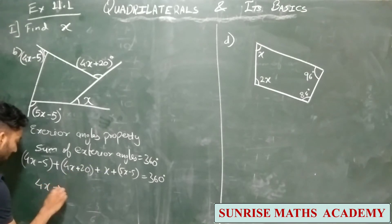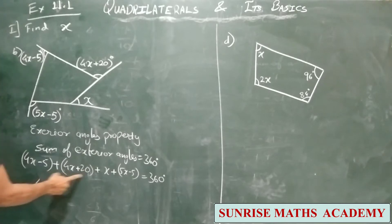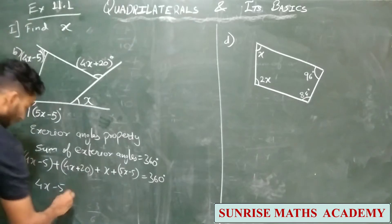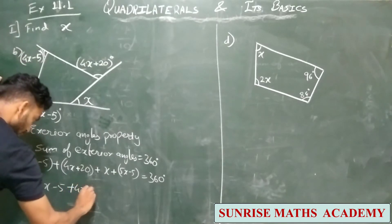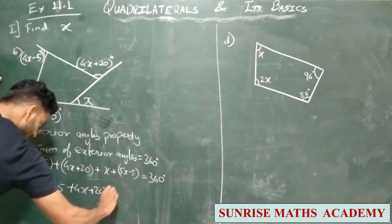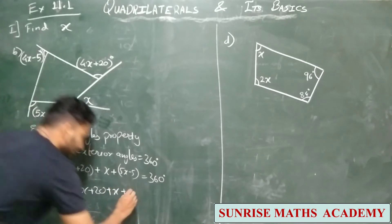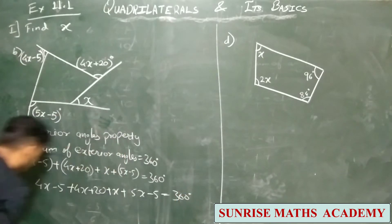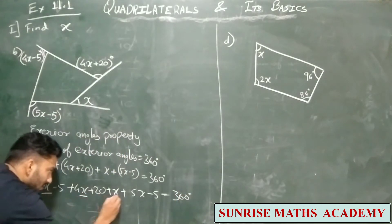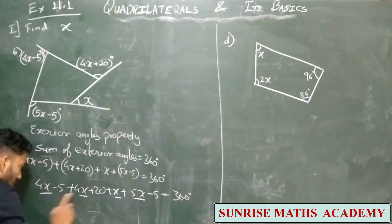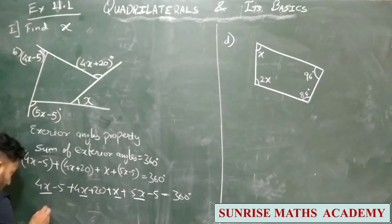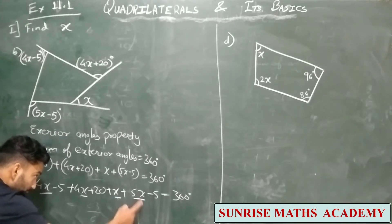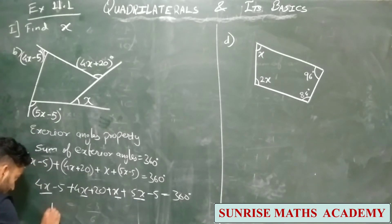Opening the brackets: 4X − 5, this is plus so no change in sign; here also plus so no change. So we get: 4X + 4X + 20 + X + 5X − 5 = 360. Collecting like terms — X terms and constant terms: 4X + 4X + X + 5X gives 14X.